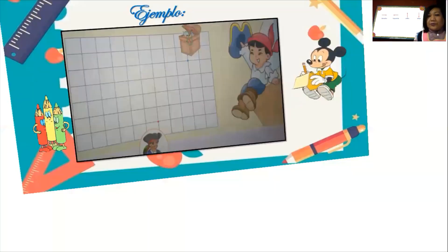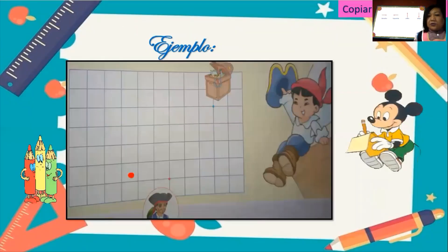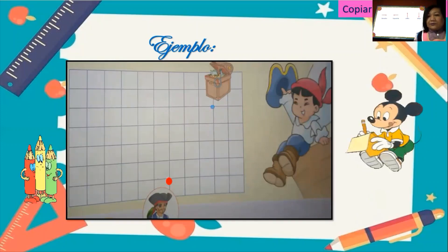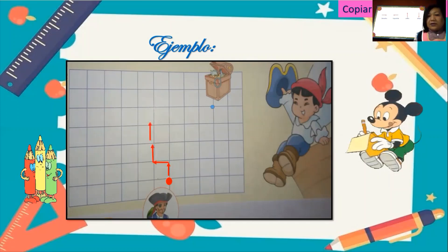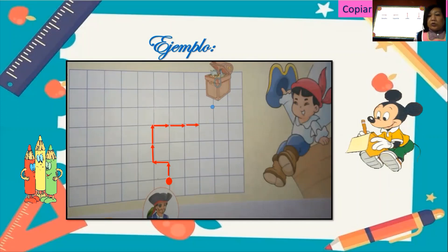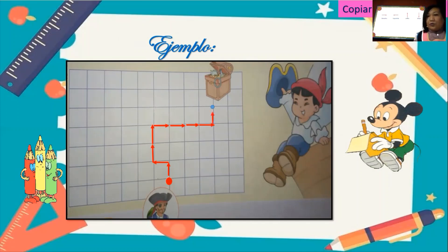Muy bien, chicos. Y aquí estamos viendo el ejemplo. El punto inicial, recuerden, es el punto rojo. Y el punto final es el punto celeste, es a donde queremos llegar. Las flechitas que utilizamos nos van a ayudar a trazar este camino dentro de la cuadrícula y poder desplazarnos en orden siguiendo la clave. En este caso: una para arriba, una para la izquierda, dos para arriba, cuatro flechas para la derecha y finalmente una flecha para arriba. Y llegamos al punto final.